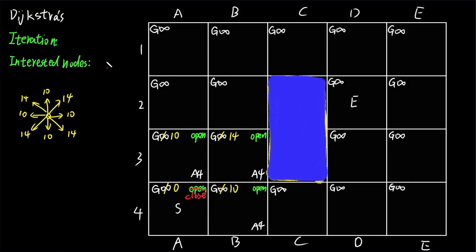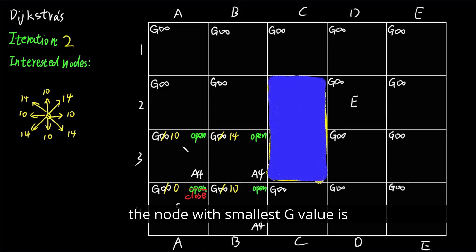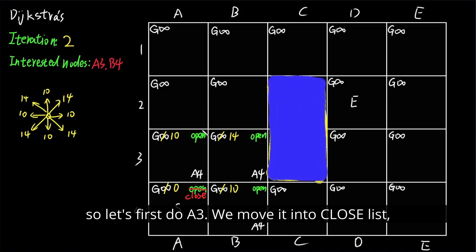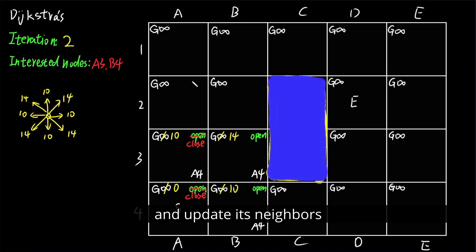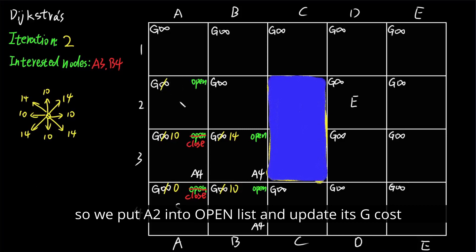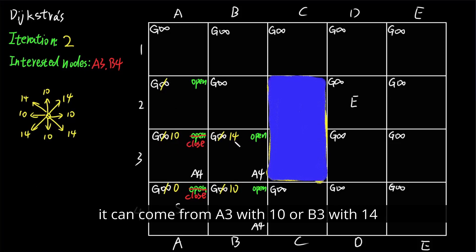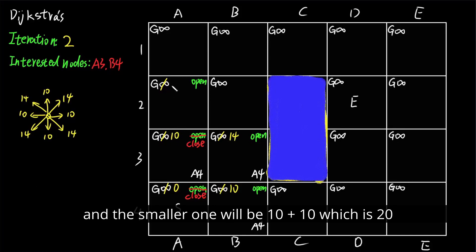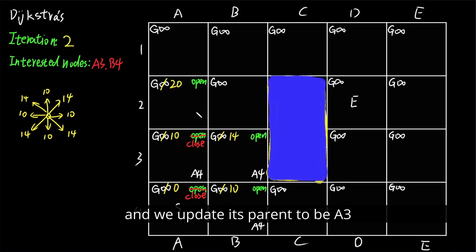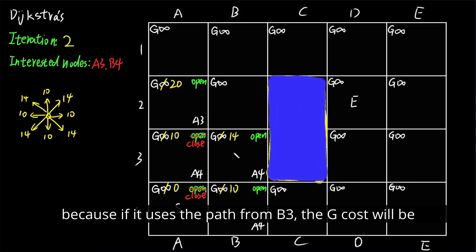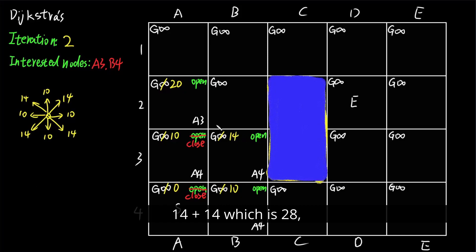Iteration one is done. Moving to iteration two: in the open list, the nodes with smallest g cost are A3 and B3, both with g value 10, so we explore these two nodes. Let's do A3 first. We move it into the closed list and update its neighbors. We put A2 into the open list and update its g cost. It can come from A3 with 10 or B3 with 14. The smaller option is 10 plus 10 = 20, so we update A2's parent to A3. Coming from B3 would give 14 plus 14 = 28, which is larger.